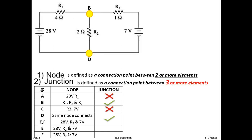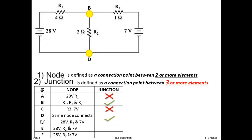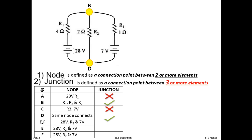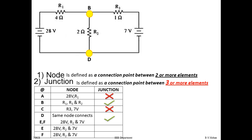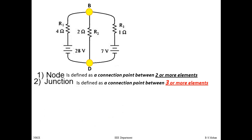We have only two junctions: B and D. The circuit can also be written in a simplified form — the 7V and 20W are in series, then the 2Ω is between the two junctions, then 1Ω and 7V are again in series. The circuit is still electrically the same; this simplified form will help you understand further.